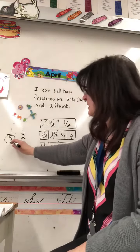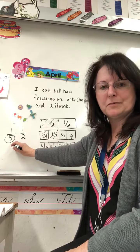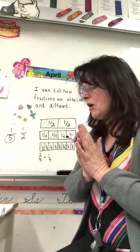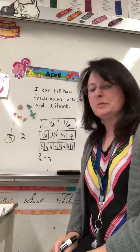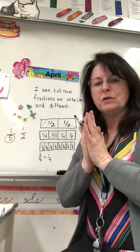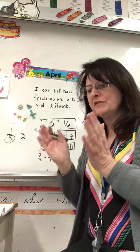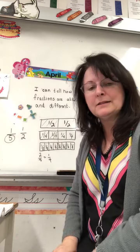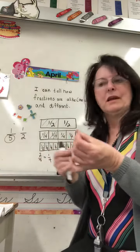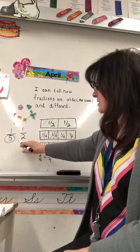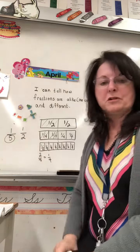So the more pieces that you have to make out of something, the smaller those pieces are. You can do that with a piece of paper. You can take the paper, fold it in half, and cut it. Or you can take another piece of paper, and you can fold it into, say, eighths, and cut it. And you can see right there that the more pieces you cut it into, the smaller those pieces are.